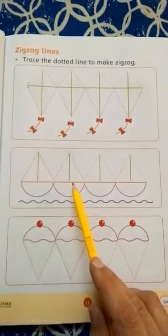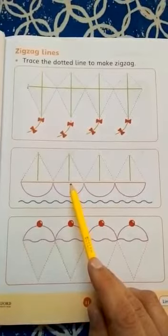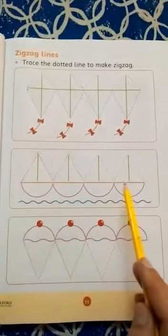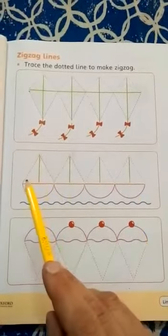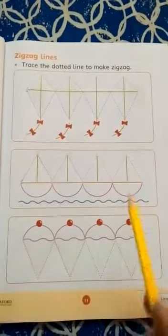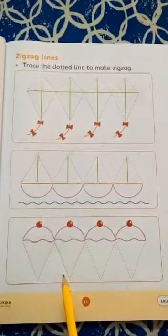In the second picture, we are going to trace the dots again. We will make many lines. These are boats and these are zigzag lines. In the third picture, what is this?